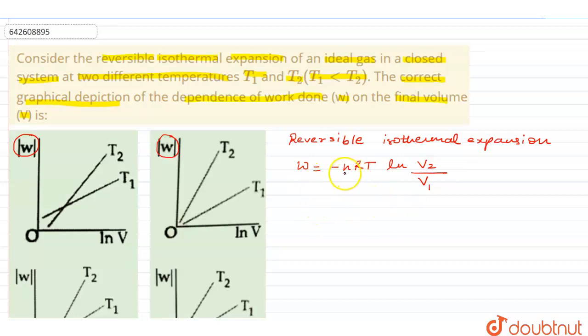n is the number of moles, R will be the universal gas constant, and T is the temperature. It's an isothermal plot. V2 and V1, V2 is final volume, V1 is initial volume.